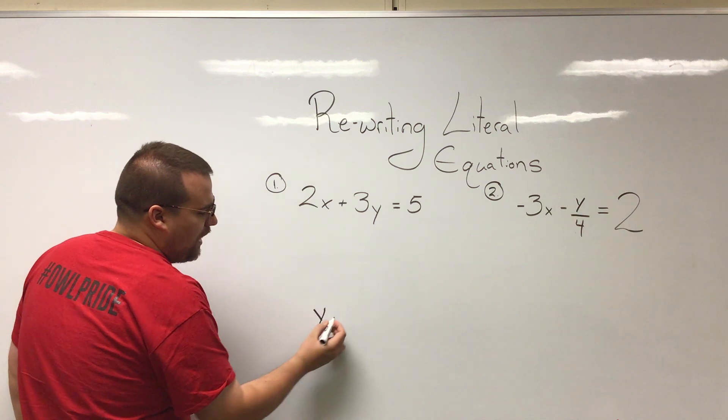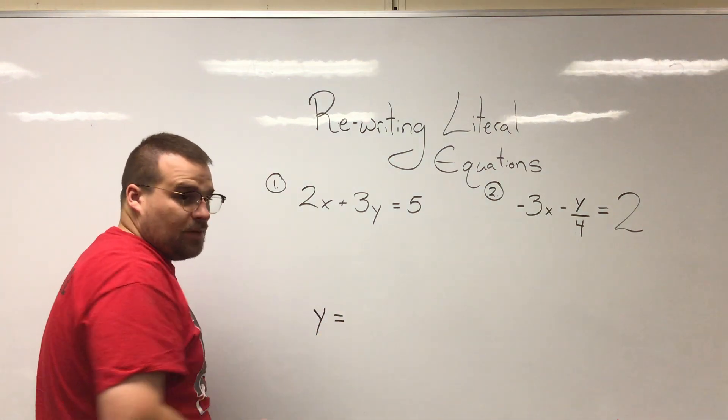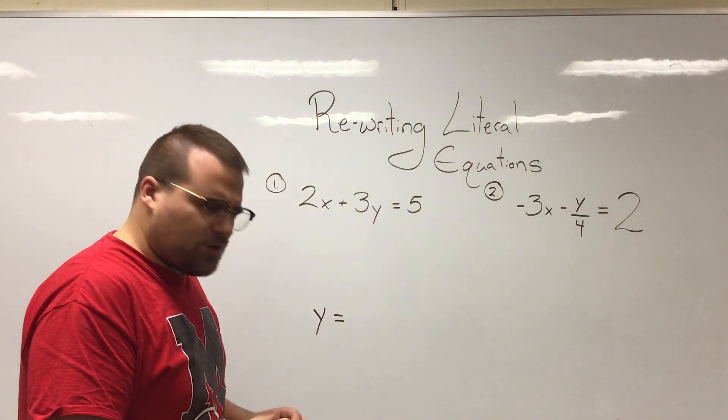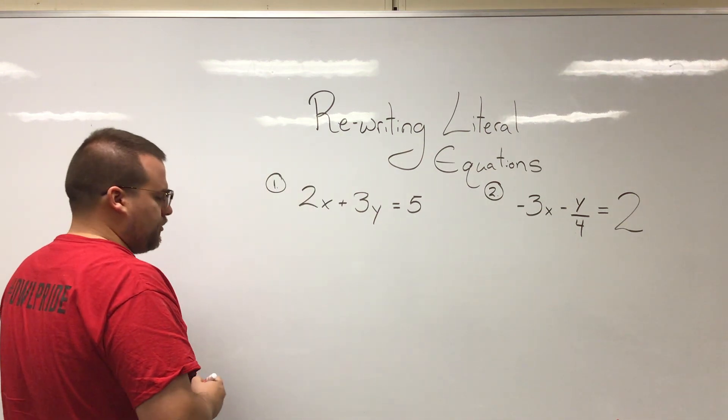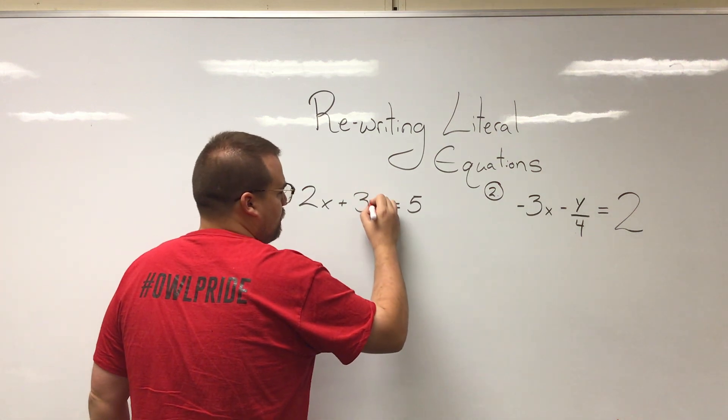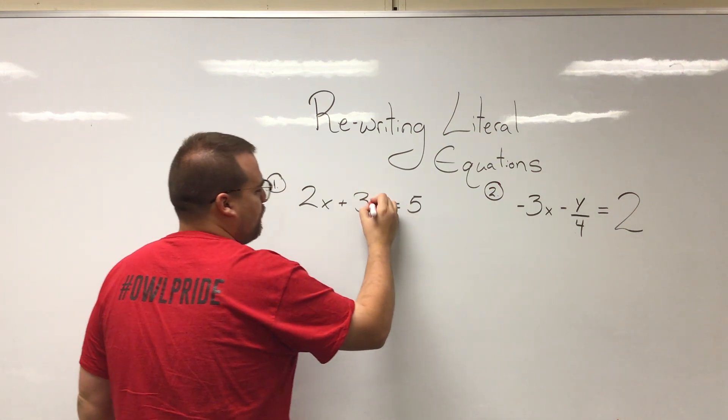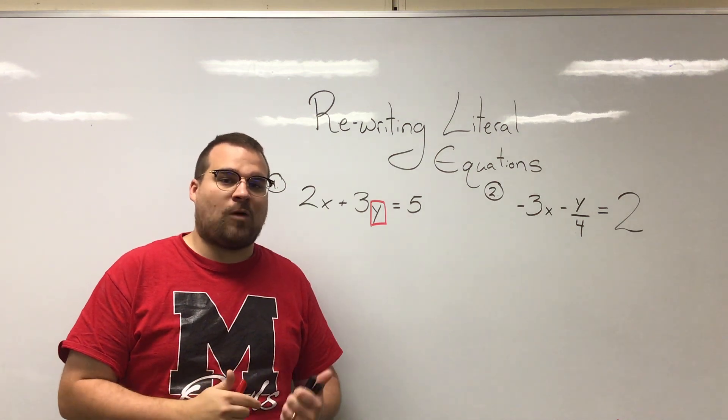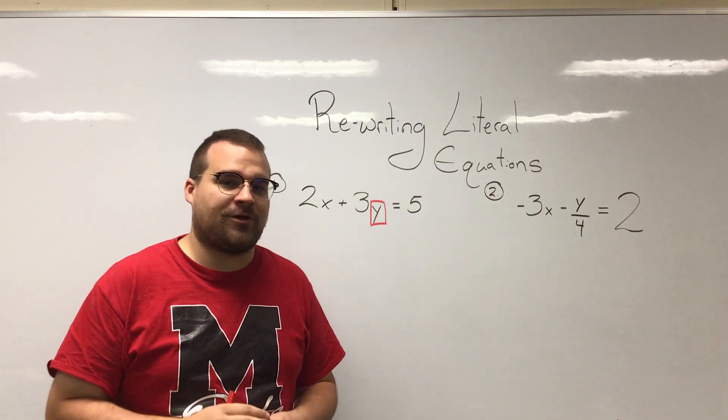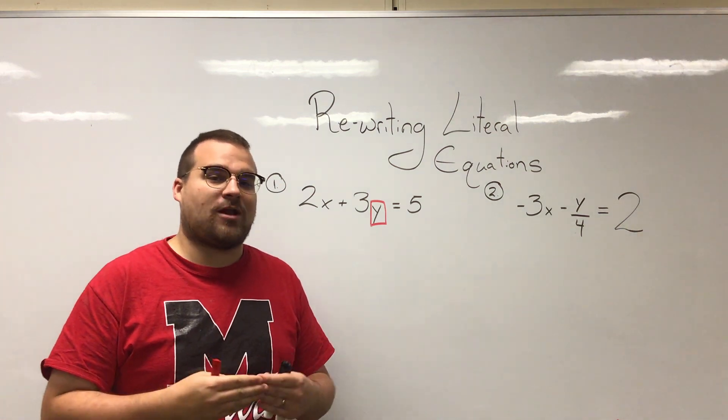Now let's talk about how to do that. Our first goal, first thing I want to do is I'm just going to put a box around the variable I want to get on its own. That y is what I need to get on its own and I need to get rid of everything else around it.